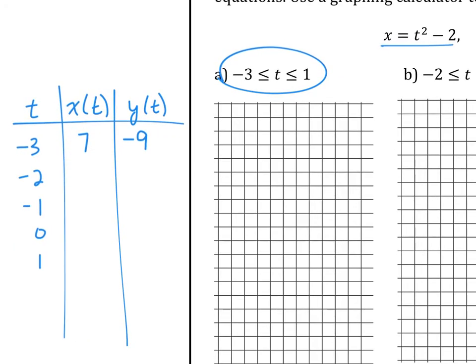Let's try another one. When t is negative 2, what is x? 2. And when t is negative 2, what is y? Negative 6. So we're going to go ahead and finish that chart.